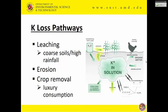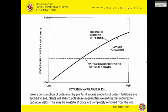Lost pathways for potassium include leaching in coarse soils with high rainfall and erosion. One unique thing about potassium is that plants like to take up more when it's available — this is called luxury consumption. If there's more potassium in the soil, plants will take up more than they need. When we harvest the plant, that extra potassium is gone — a net loss, especially if that potassium came from fertilizers. This example shows potassium content in plants: what plants typically need versus what they take when excess is available.